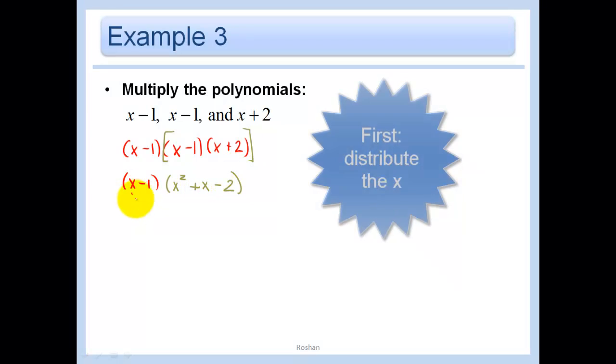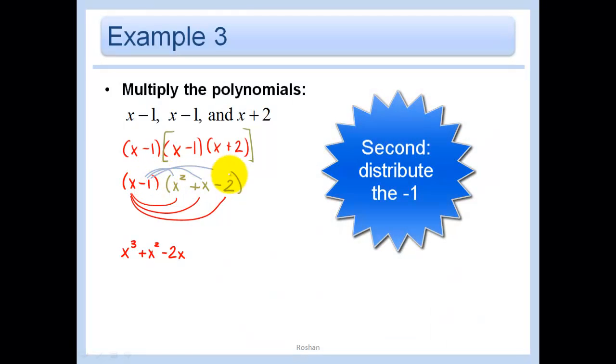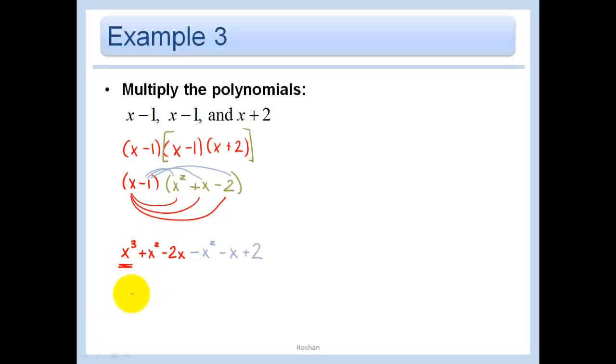So now I'll go ahead and I will distribute that x as my first step. So I get x cubed plus x squared minus 2x. And then I need to distribute the negative 1 to each of these terms. So I get minus x squared minus x plus 2. And then I'll go ahead and combine like terms. So I have x cubed. And then I have x squared minus x squared. Those go away. And then I have minus 2x minus x is minus 3x. And then I have plus 2 as my constant. And that's that one.